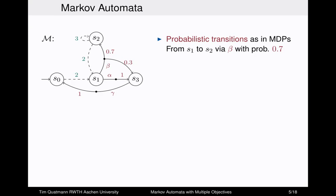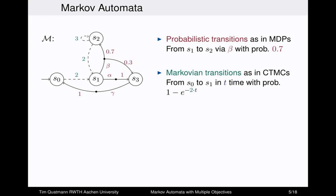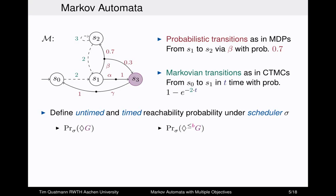Let's have a closer look at the Markov automata model. There are two types of transitions. First, probabilistic transitions, which work as in MDPs — for example, at state S1 we pick action alpha or beta, and if we pick beta, we go to S2 with probability 0.7 and otherwise to S3; these transitions happen instantaneously. Second, there are Markovian transitions, which work as in continuous-time Markov chains — for example, a dashed arrow represents going from S0 to S1 within T time units with probability 1 minus e to the minus 2T, modeling exponentially distributed delays.